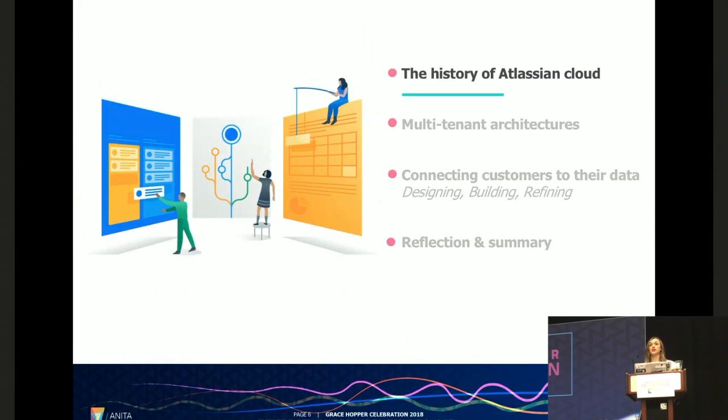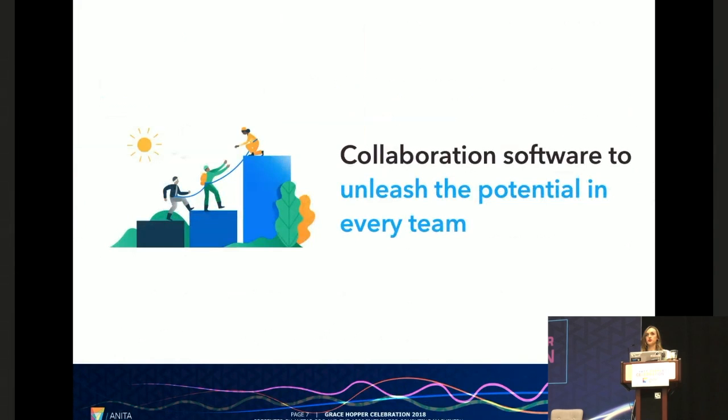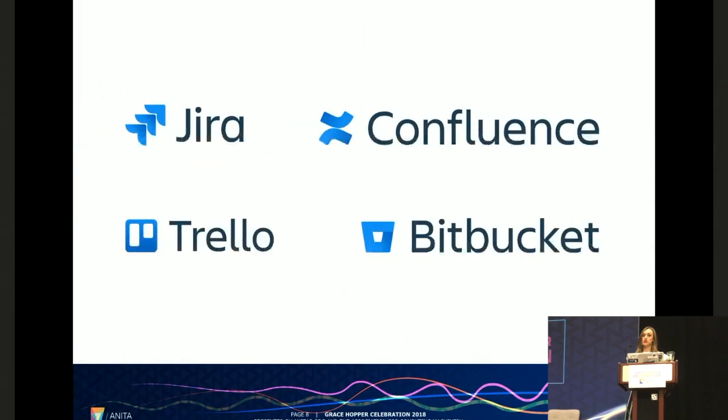So to start off with the history of Atlassian Cloud, but just before we get too far into things there might be a couple of you sitting there thinking what's Atlassian? Well at Atlassian we specialize in building collaboration software to unleash the potential in every team. That means that we're responsible for building tools such as Jira, Confluence, Trello, and Bitbucket.